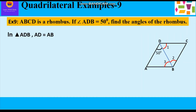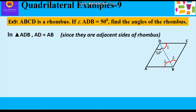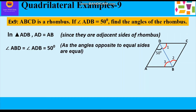In triangle ADB, AD = AB since the adjacent sides of a rhombus are equal. Therefore angle ABD (angle 3) = angle ADB = 50°, because angles opposite to equal sides are equal. Since AD = AB, angle ADB = angle ABD. So angle ABD, angle number 3, is 50°.